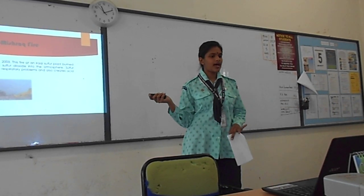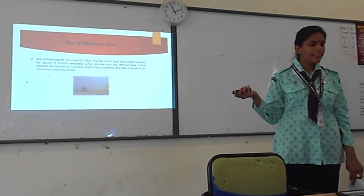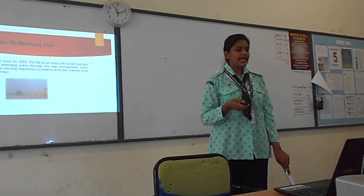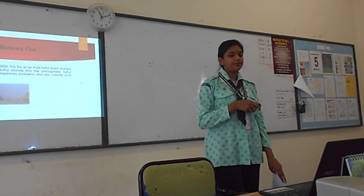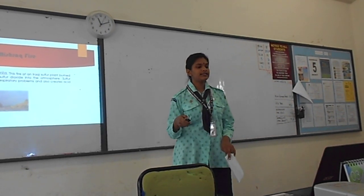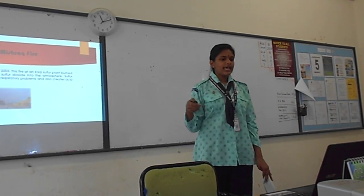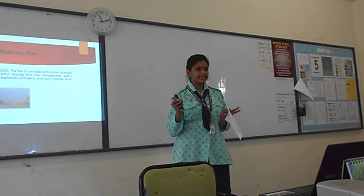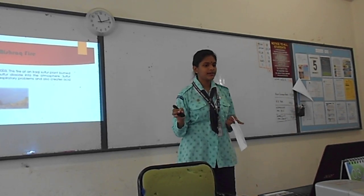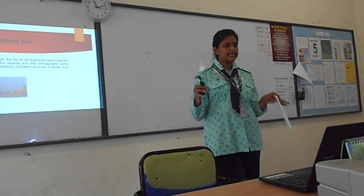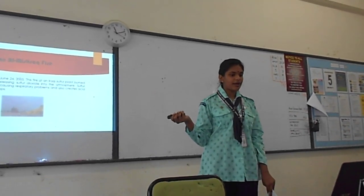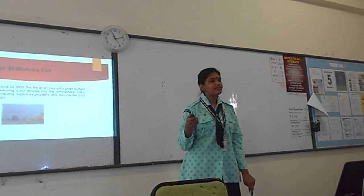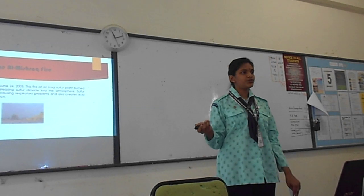The next man-made disaster is the Al-Mishraq fire on June 24, 2003. This fire at an Iraqi sulphur plant burned for about a month, releasing sulphur dioxide into the atmosphere. Because of this, people were having respiratory problems and acid rain caused crops to be destroyed.